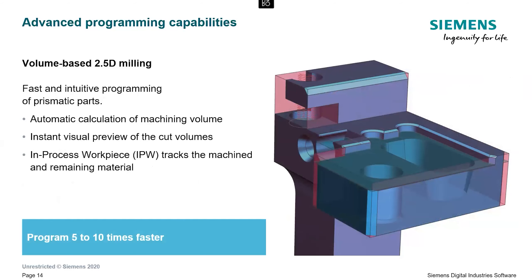Volume-based 2.5D milling provides a very fast and intuitive method of programming prismatic parts. Simply select faces such as walls and floors within a 3D part model to define the machining volumes. An instant visual preview provides fast and easy validation of the planned machining operation — programming can be 5 to 10 times faster. The system continuously keeps track of uncut material and minimizes air cutting, reducing machining time by up to 10%.